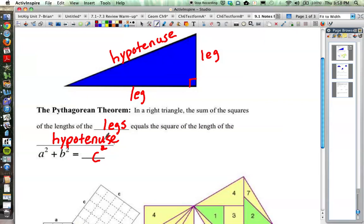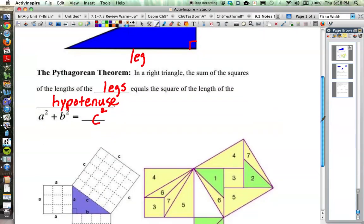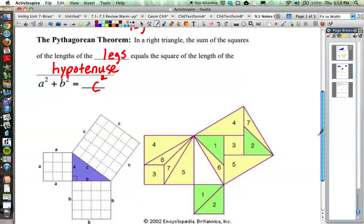This will be one of those formulas that you'll remember long after you are done with geometry. Some of you will go on to do math in college, some won't do as much, but you probably will remember the Pythagorean Theorem: a squared plus b squared equals c squared.